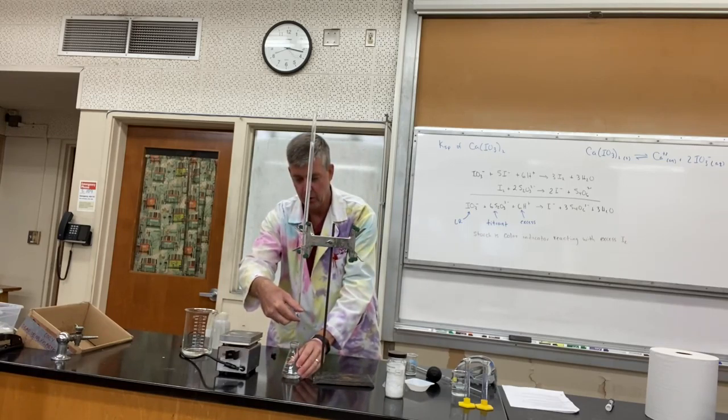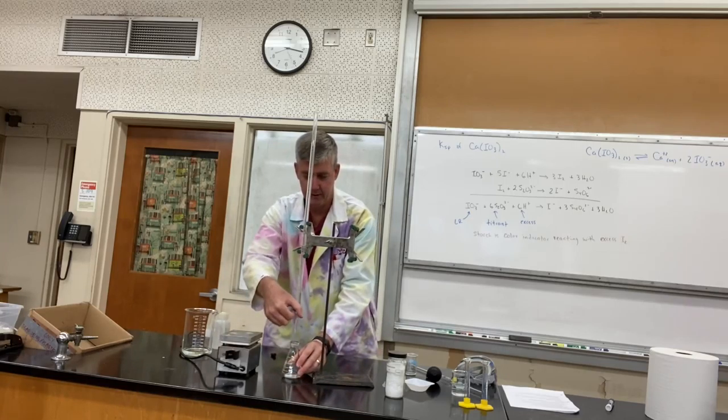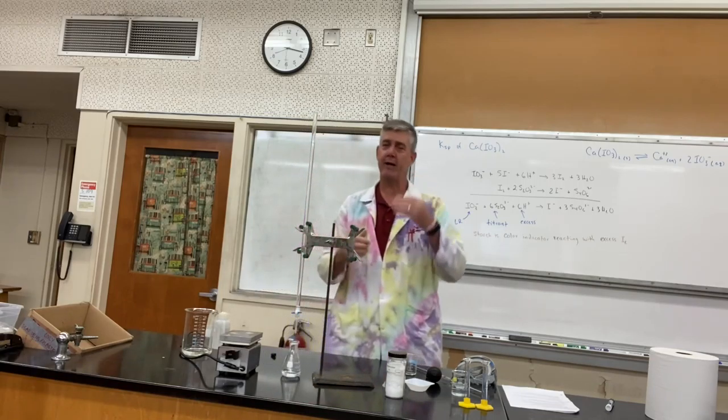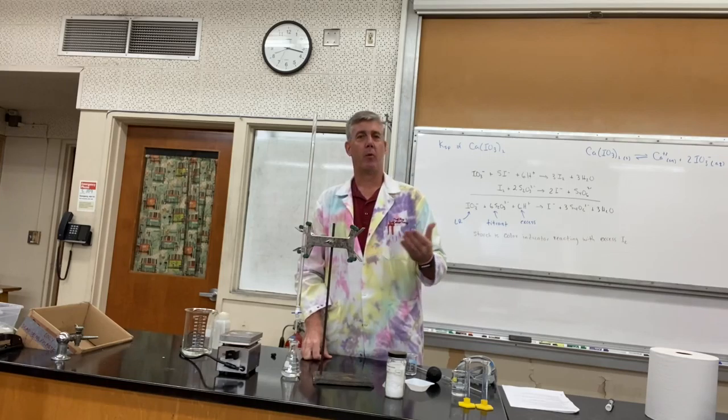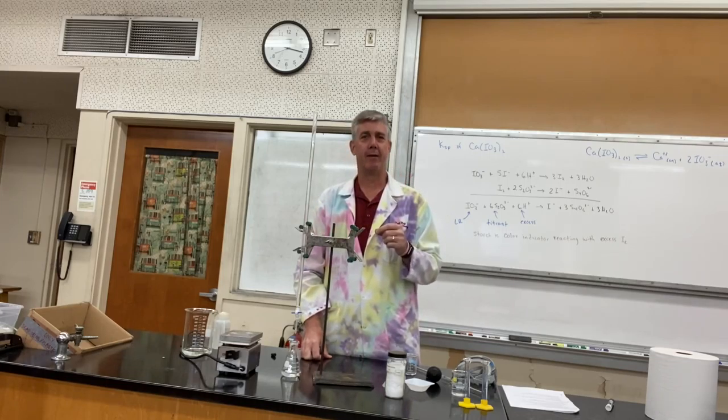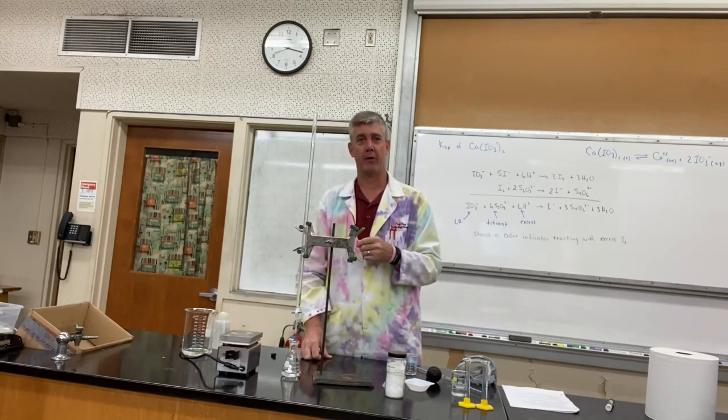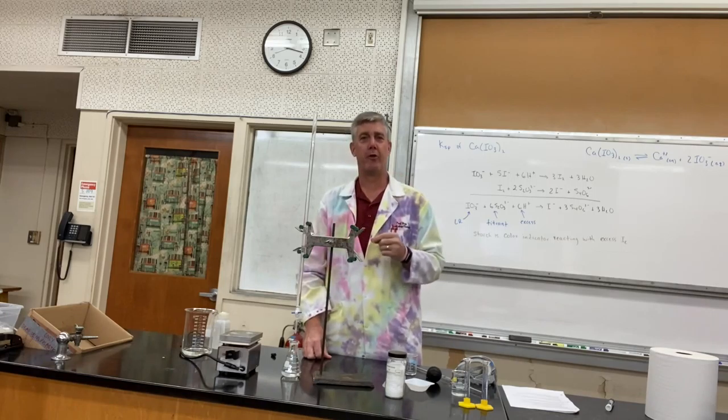Since we're using the exact same amount of our limiting reactant every time, theoretically we should use the same amount of titrant. So if we use 18 mils for our quick and dirty, what you could do on your next trial is go really fast for the first 15 mils. Just open up that valve, let it go down to about 15 mils or so, and then you can start slowing down.